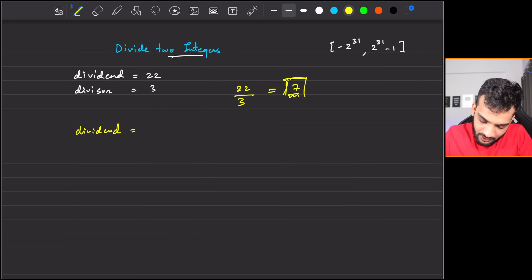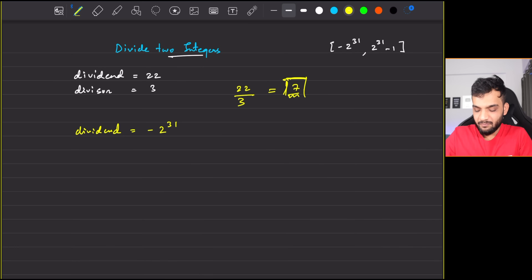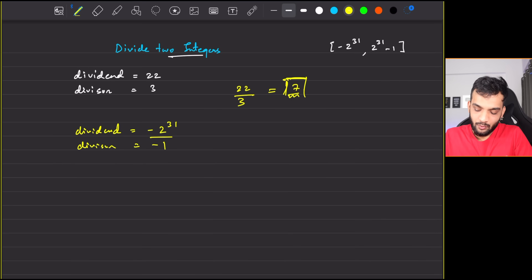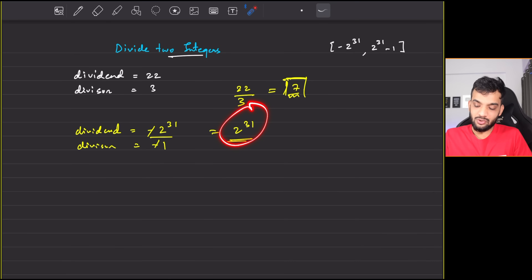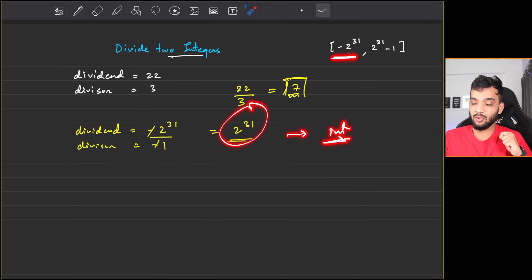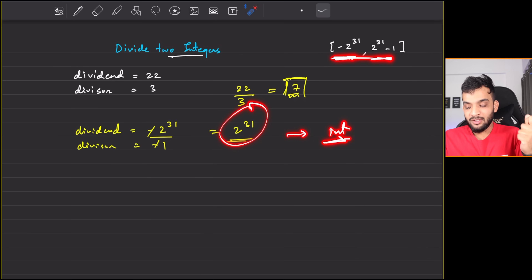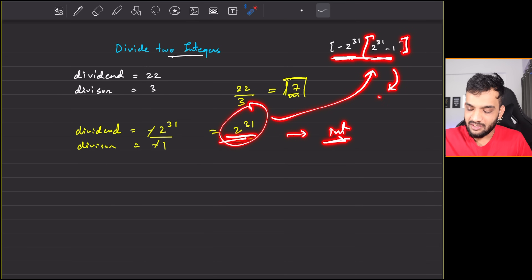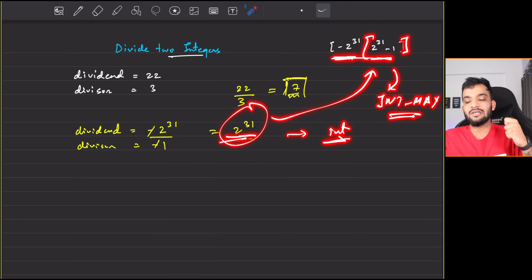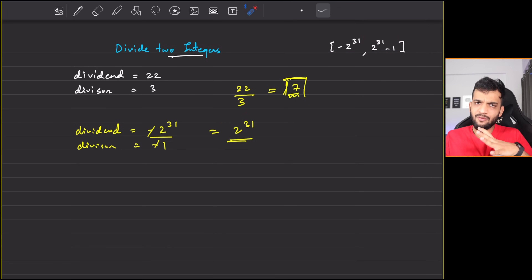For example, if the dividend is minus 2 to the power 31 and the divisor is minus 1, the result would be 2 to the power 31, which cannot be stored in integer range. In that case, return Integer.MAX_VALUE, which is 2 to the power 31 minus 1. Similarly, for negative overflow, return Integer.MIN_VALUE.